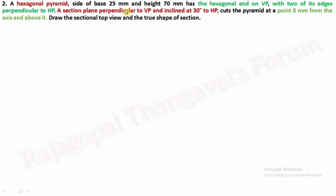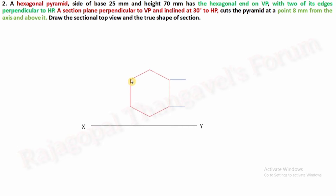Whenever you read the question, the first step is to identify the top and front view of the solid. Here the solid is on VP — the vertical plane. As per first angle of projection, the front view will be projected on the vertical plane, so the base hexagon must be the front view, and the triangle will be the top view. Regarding the position of the hexagon in the front view: with two of its edges perpendicular to HP, two sides of the hexagon must be perpendicular to HP.